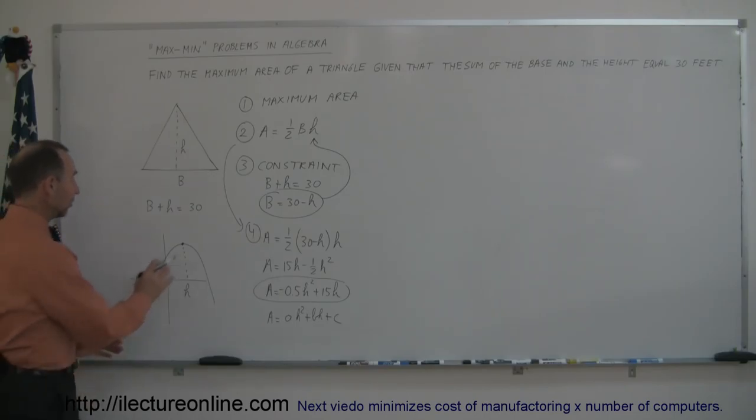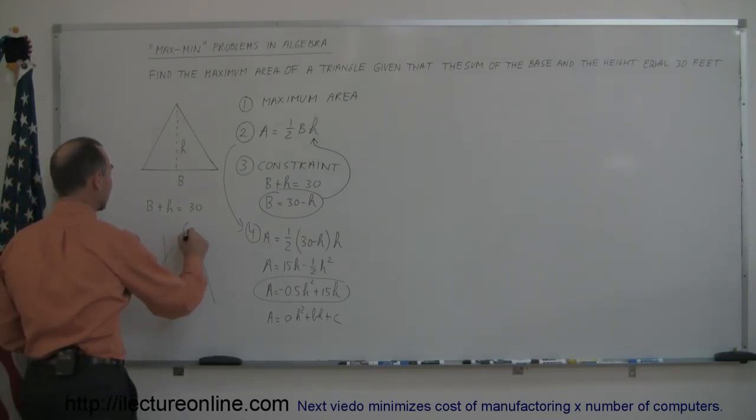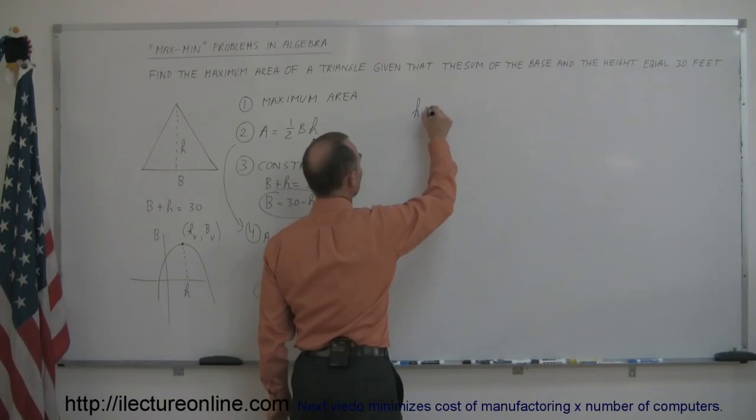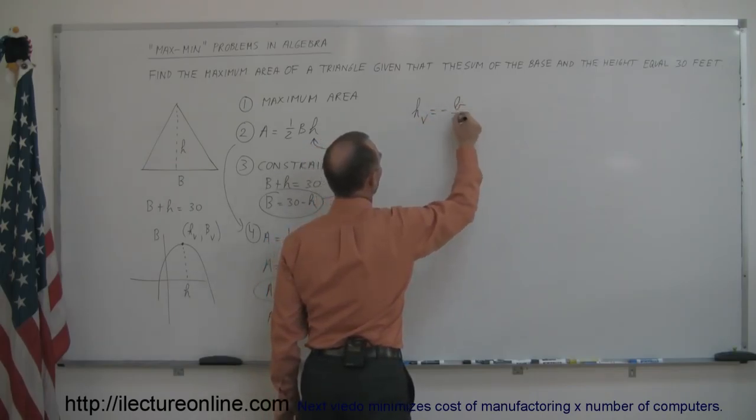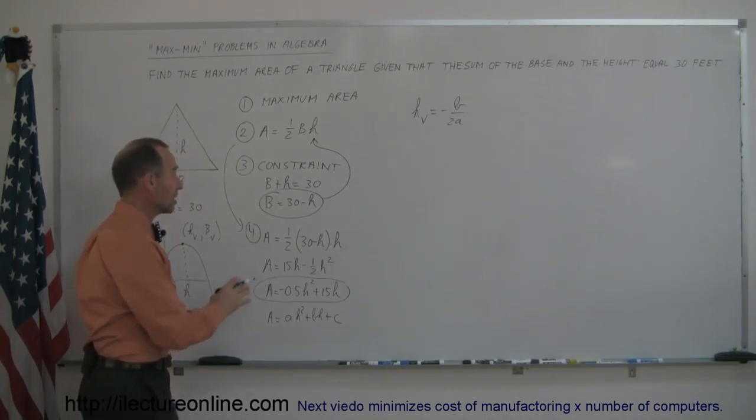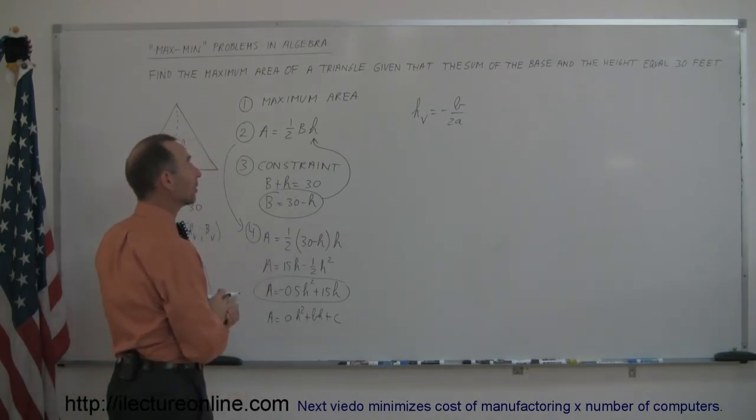And since this is the vertex of the parabola, we know that h sub v, and then of course the other axis would be b, that would be the base, b sub v. The h sub v can be found as follows: h sub v is equal to minus b over 2a. That's the way in which you find the vertex of the, what we call in this case, the independent variable.